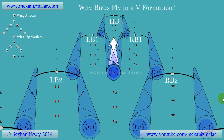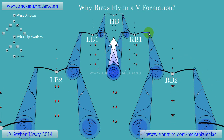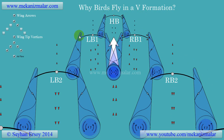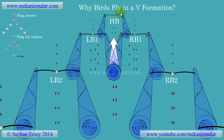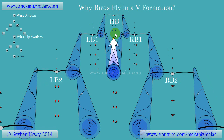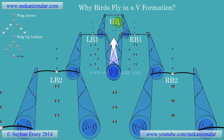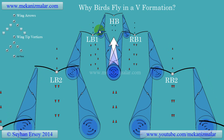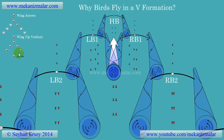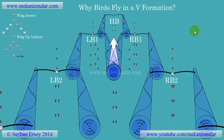The birds flying in the V formation benefit from the updraft created by the bird just in front of them. In this formation, only the head bird will spend more energy than the rest. The others will reduce their power consumption by 10-20%. If a bird flies away from the V formation, its power consumption will be just as much as the head bird.